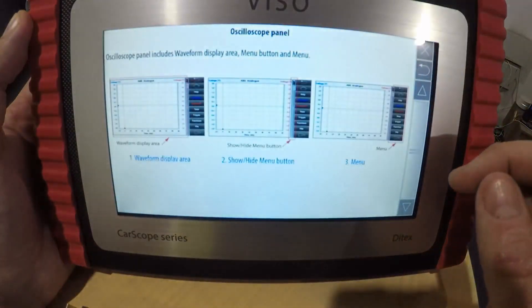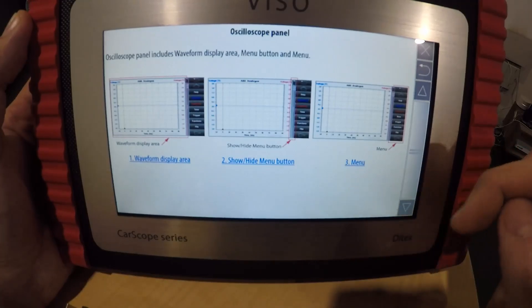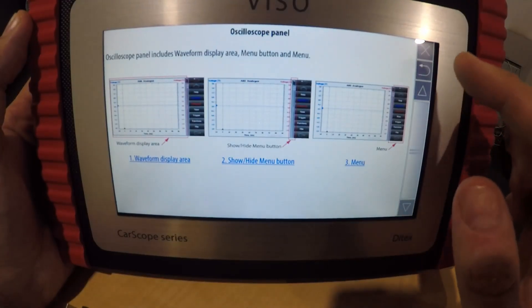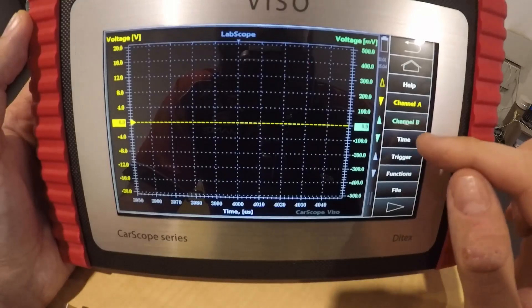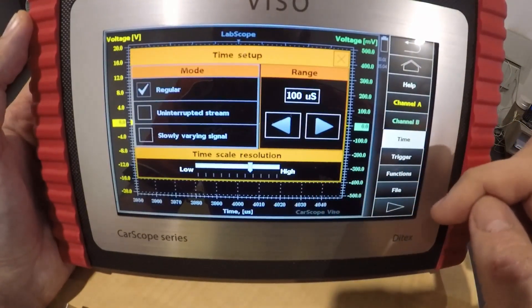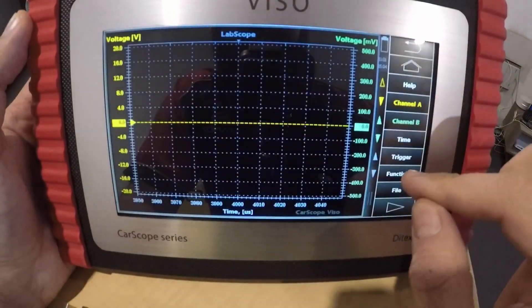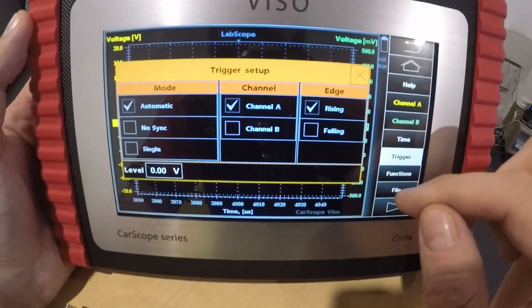Obviously you press the help button, it gives you a more detailed instruction if you don't know exactly what you're doing or how to use the product. There's certain setups for time. You can obviously set a trigger as well, pretty standard on most scopes anyway.